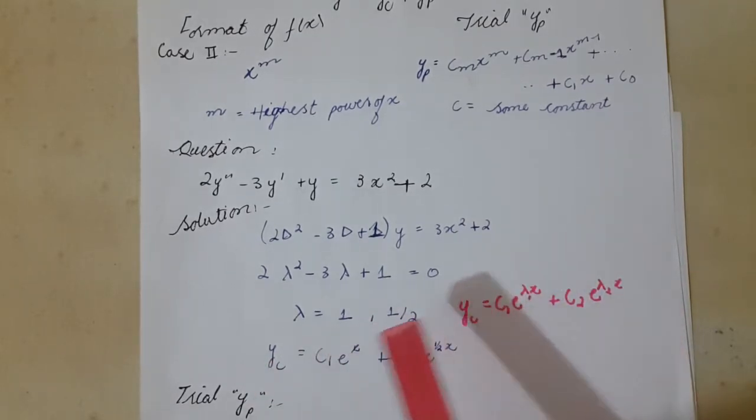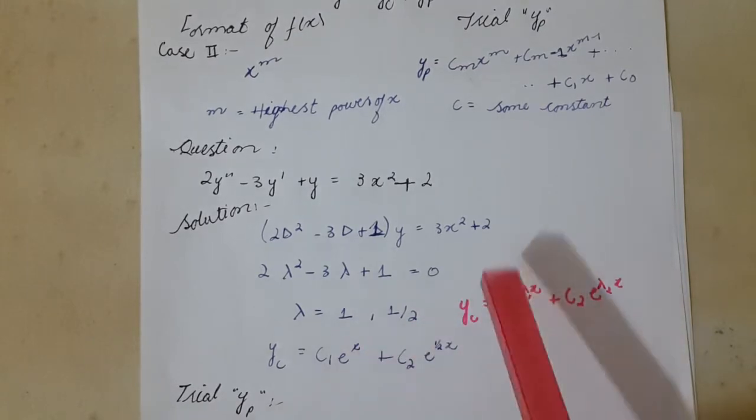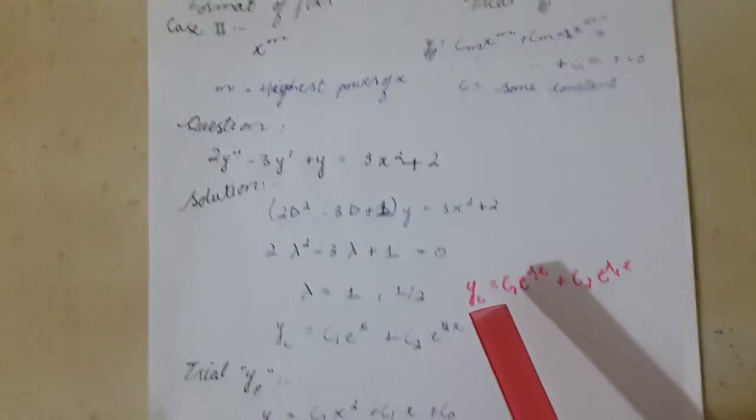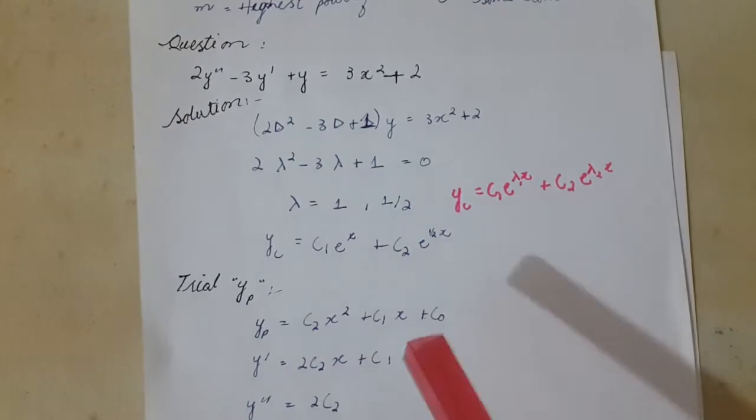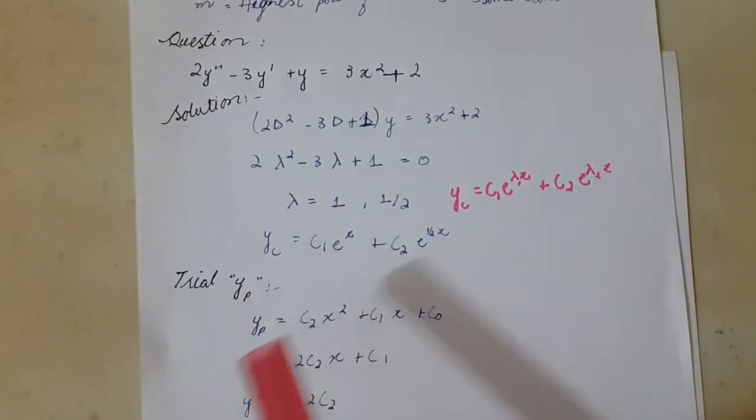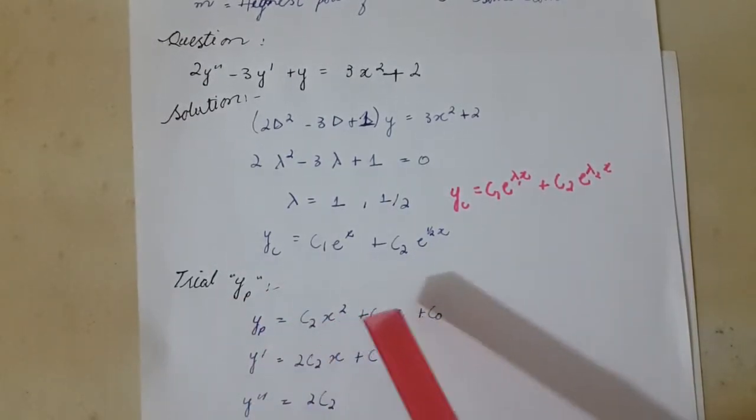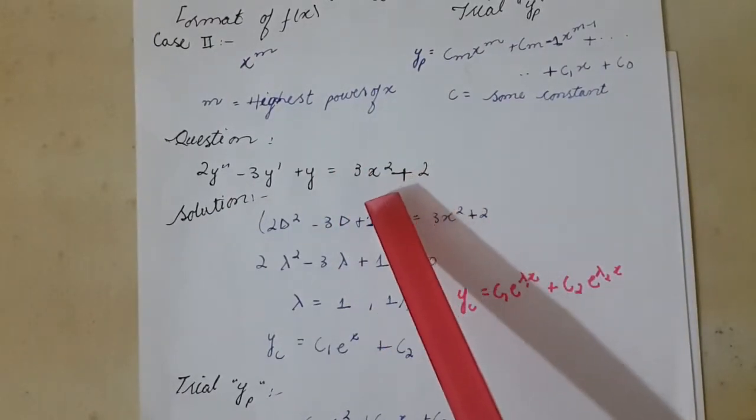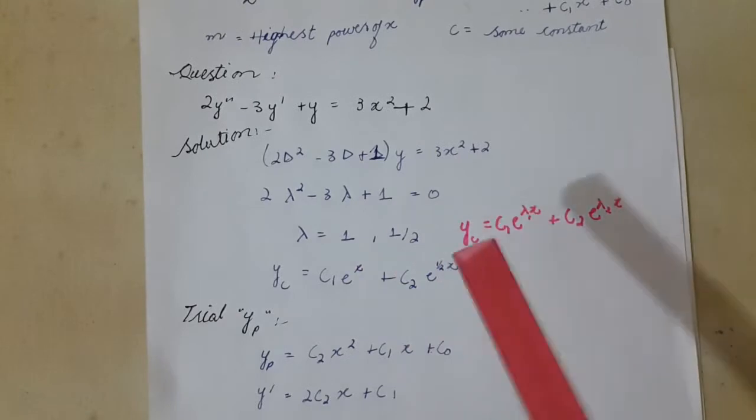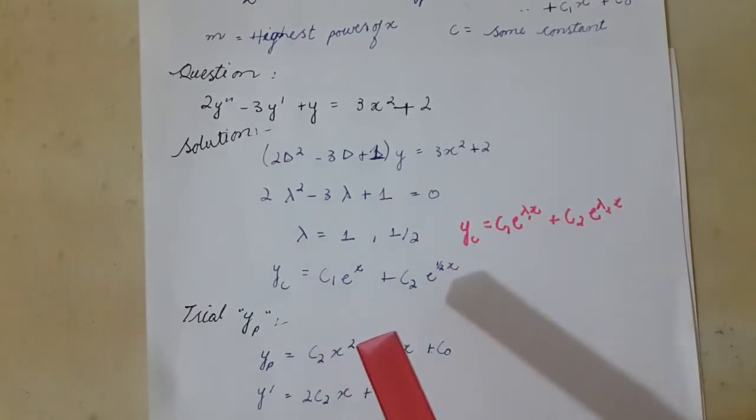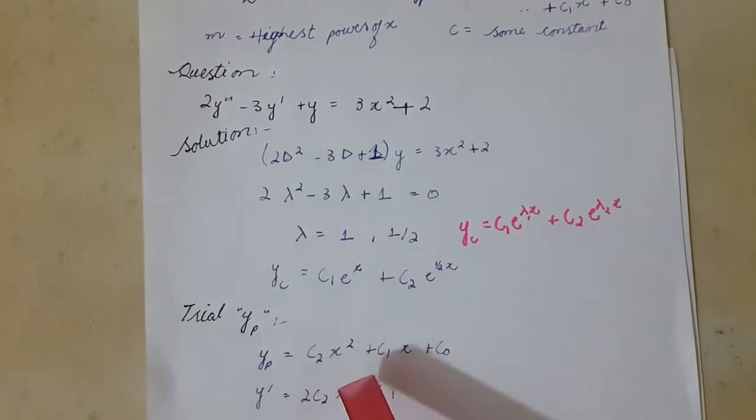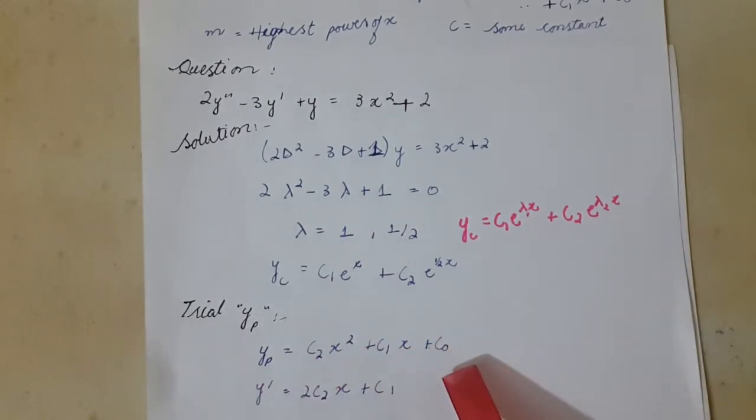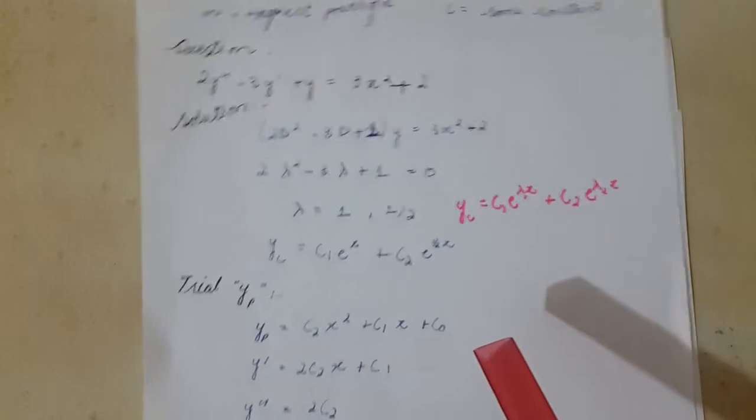The constants of yc and yp are different. Trial yp: Now we know that here 3x², x has highest power square, so I will take values from c2. yp = c2·x² + c1·x + c0. We will take derivative and double derivative.